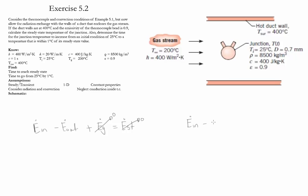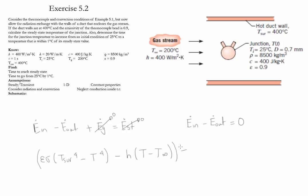Therefore, the energy going in minus the energy leaving is equal to zero. Please note that in this case, the net radiation has to be equal to the amount of convection. Therefore, we can write that the amount of radiation from the surface going into the body, minus the amount of convection going to infinity, multiplied by the surface area A_S, has to give us zero.